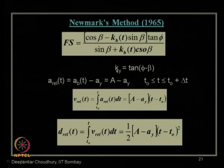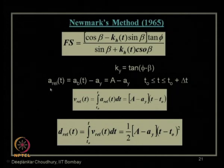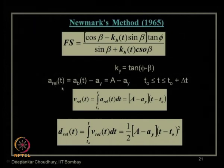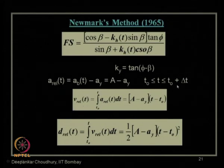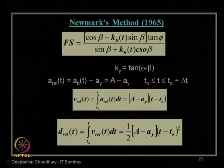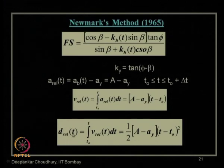How much displacement will occur needs to be estimated. Relative acceleration causing displacement equals actual acceleration minus yield acceleration. Integrating this relative acceleration over the relevant time gives relative velocity, and further integrating relative velocity gives relative displacement of the soil slope. This is how displacement is obtained using the Newmark sliding block method.